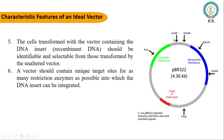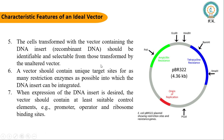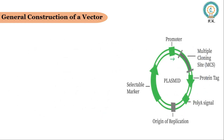This is the restriction site for restriction enzymes like EcoR1 and HindIII. This is the restriction site for restriction enzymes like BamH1 and XmaI. This is also a restriction site for restriction enzymes like PstI. So EcoR1, HindIII, BamH1, and PstI are all restriction enzymes. When expression of the DNA insert is desired, the vector should also contain suitable control elements such as promoters, operators, and ribosome binding sites.